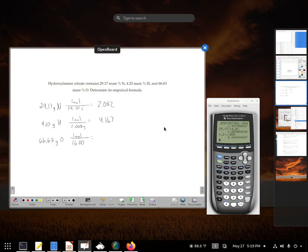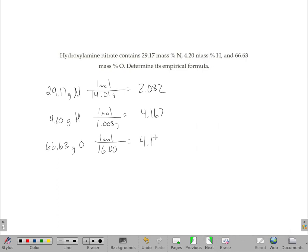And then last one, 66.63 divided by 16 also gives me 4.16. That's 4.164. I'd be dividing by the smallest, which is that 2.082, and divide all of them by that. But the top one and the bottom two are about the same.